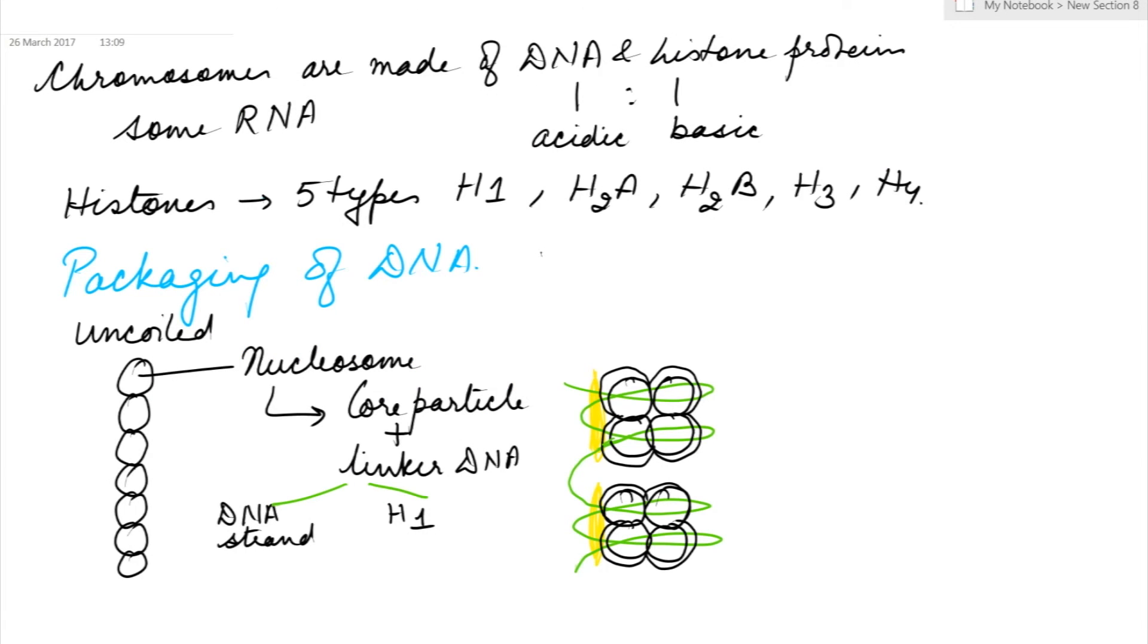Chromosomes are made of DNA and histone proteins in the ratio one is to one, where DNA is acidic and histone proteins are basic. Some amount of RNA is also present due to transcription.